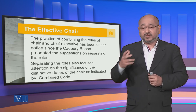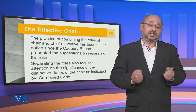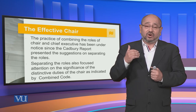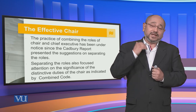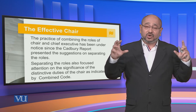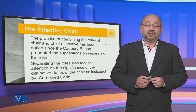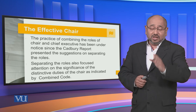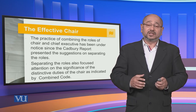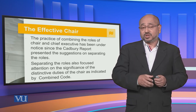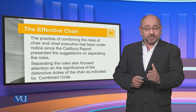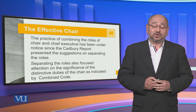Separating the roles also focused attention on the significance of the distinctive duties of the chair as indicated by the Combined Code. In the Combined Code, three committees started functioning on very core areas of the organization. Those independent committees, manned by the board of directors, would play a very active role to ensure the organization would remain on its path of achieving its objectives, and most importantly would ensure that the chief executive officer would not become omnipotent, whereby he would be calling the shots and the board would only be a post office, just stamping the different issues put in front of them.